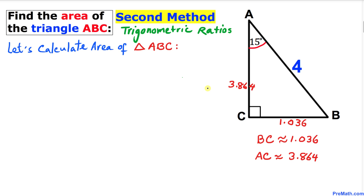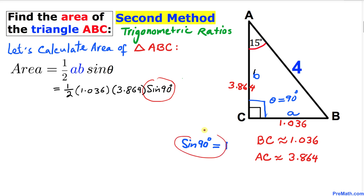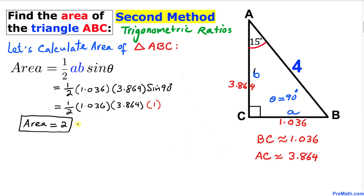Now for the final step: let's calculate the area of triangle ABC using the formula one half times A times B times sine theta. Picking sides BC and AC as A and B, the angle between them is 90 degrees. So we get one half times 1.036 times 3.864 times sine of 90 degrees. Since sine of 90 degrees is 1, the area of triangle ABC turns out to be 2 square units.